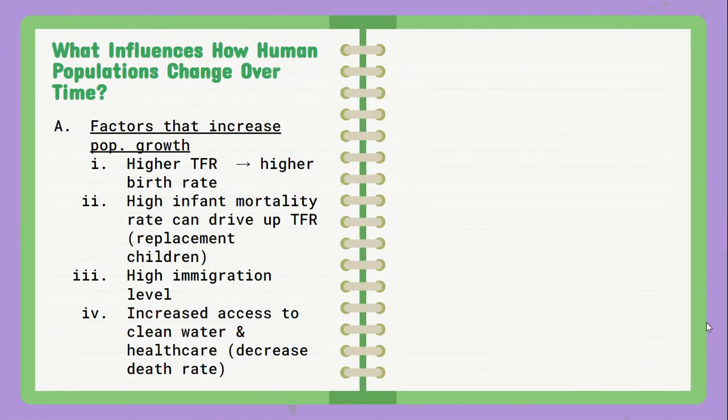When thinking about carrying capacity, it's important to note the factors that increase as well as decrease the human population over time. Factors that increase population growth include a higher total fertility rate, and high infant mortality rate usually drives up the TFR and their replacement level fertility. Immigration can also influence the population growth rate of countries — like in the United States, our growth rate is slowing down, but immigration rates can keep it quite high even if TFR is falling.